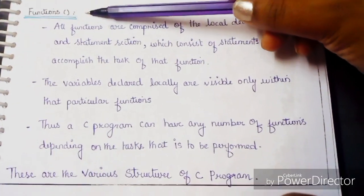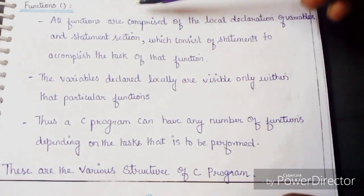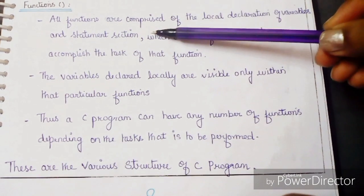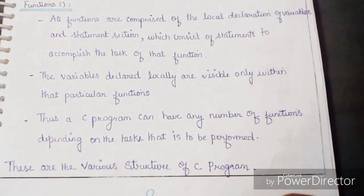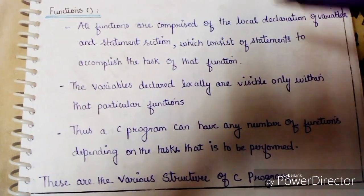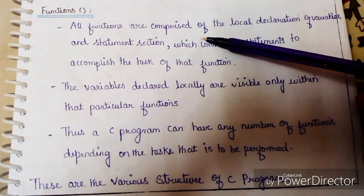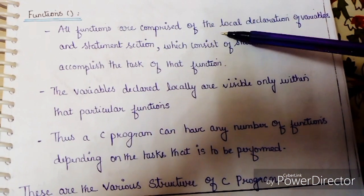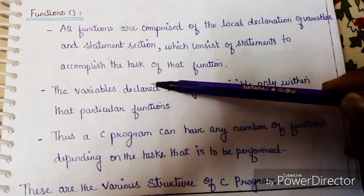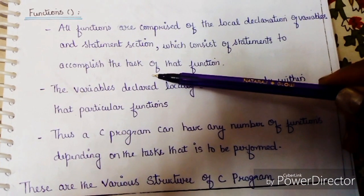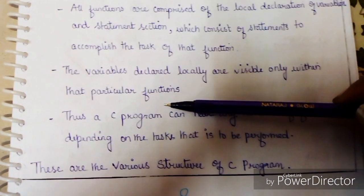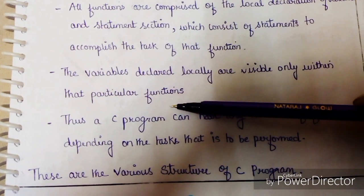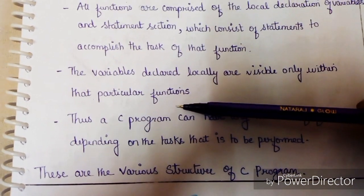User-defined functions consist of a local declaration of variables and a statement section. All functions are comprised of local variable declarations and a set of statements. Local variables are only visible within their own function — they have local scope.